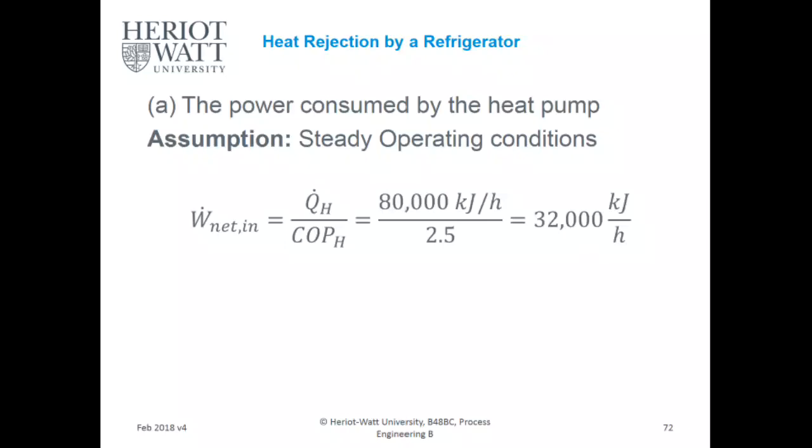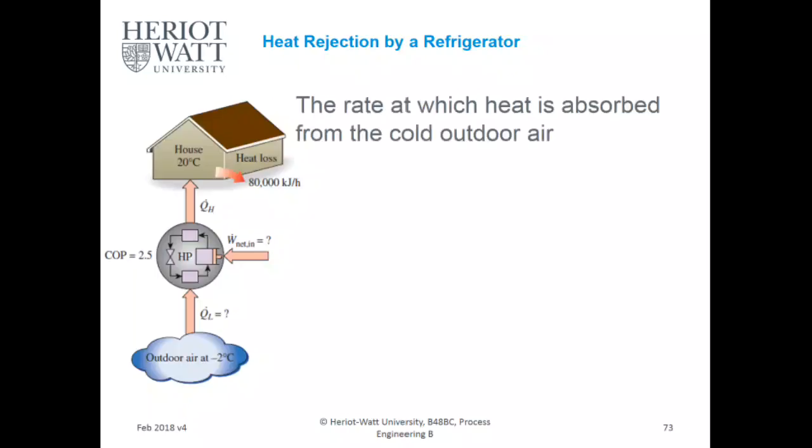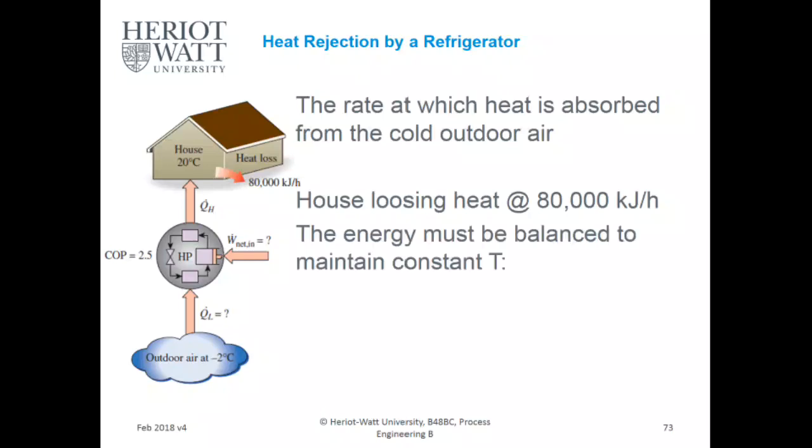Dividing by 3600 to get 8.9 kilowatts, kilojoules per second. The rate at which heat is absorbed from the cold outdoor air: the house is losing heat at 80,000 kilojoules per hour and the energy must be balanced to maintain a constant temperature.